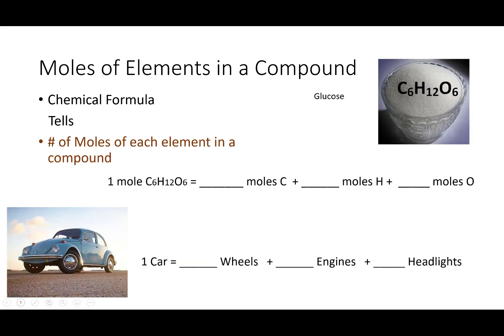So if I look at the glucose molecule, if I have a mole of them, a mole of glucose molecules contains six moles of carbon atoms, twelve moles of hydrogen atoms, and six moles of oxygen atoms.